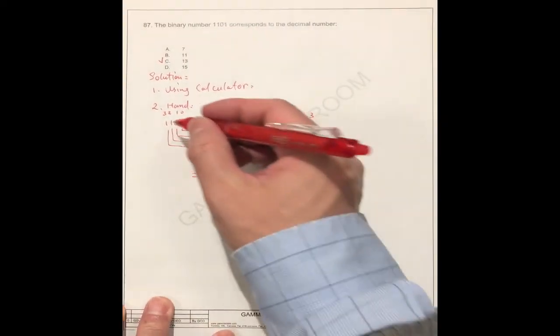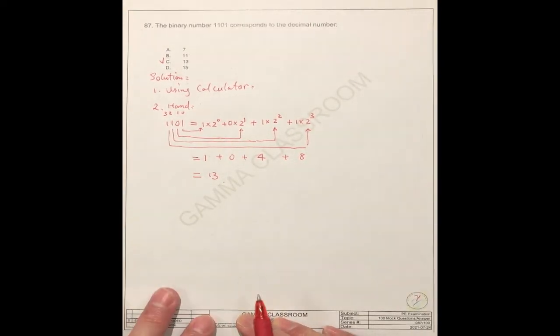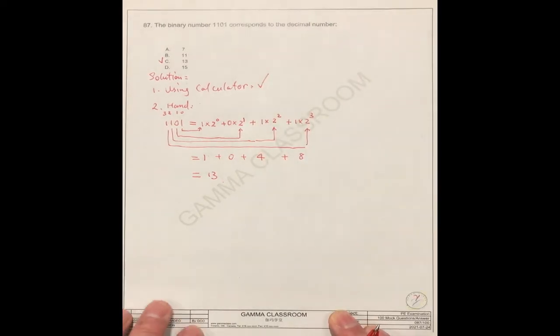So the correct answer should be 13. So you need to spend so many times. Your time is very important. So use the calculator. This is easy.